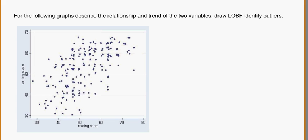So if I look in here, it seems like all the data is kind of going generally this way, so I'm going to put in a line that does something like so. It does look like it should be a straight line — it's not really a curved trend. And there's going to be my line of best fit.